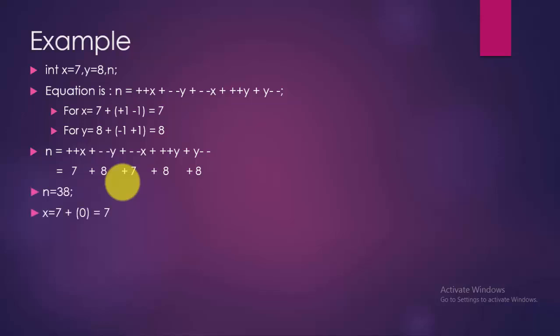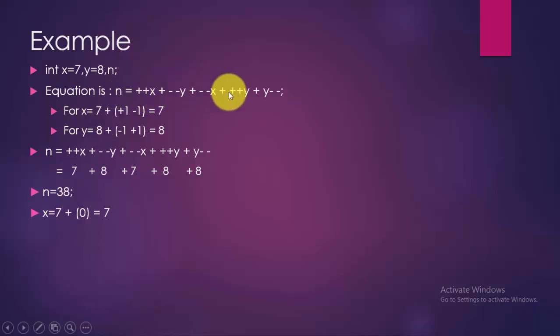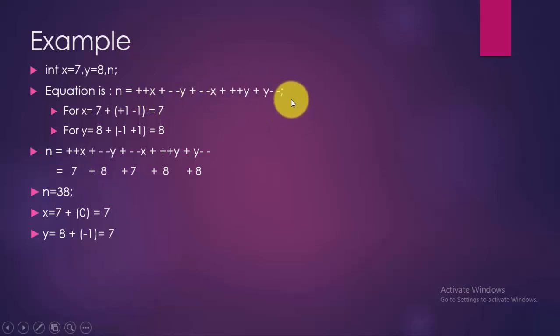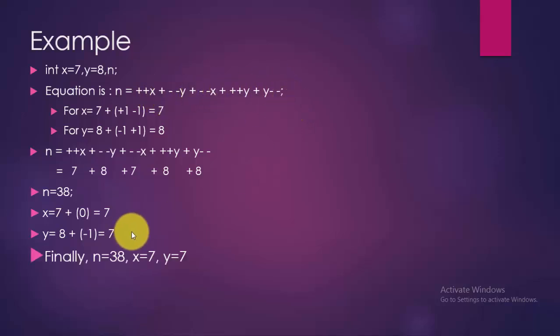Now find the algebraic sum of all postfix x operators and postfix y operators and add to x and y respectively. For x: 7 + 0 = 7. For y: 8 + (-1) = 7. So finally we get n = 38, x = 7 and y = 7 at last.